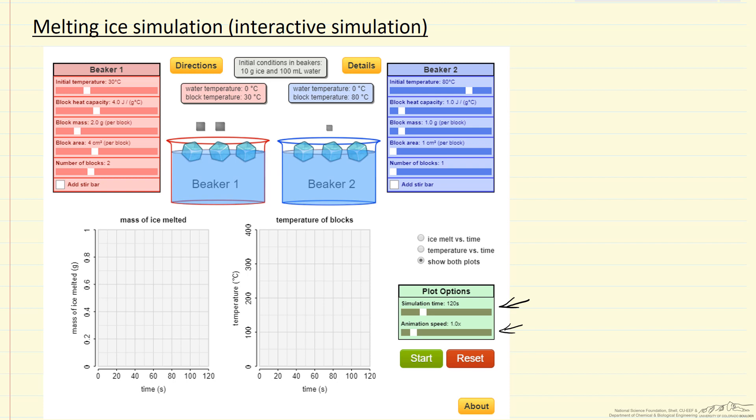Now the rate of heat transfer can be increased between the block and the water by adding a stir bar, clicking the box here for a stir bar. And so essentially we're changing the heat transfer coefficient between the water and the block.